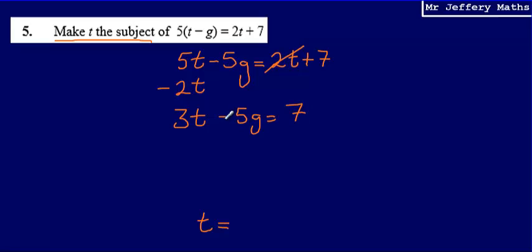The next thing is I'm going to get rid of that minus 5g by adding 5g, okay, because I want to get t on its own on one side of the equal sign. So that gives me 3t is equal to 7 plus 5g.